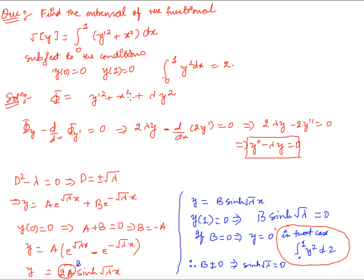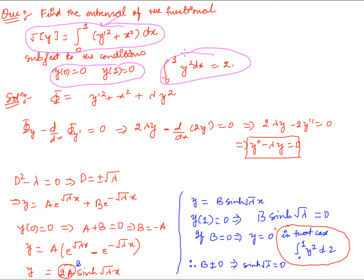Now let us look at more examples. We have to find the extremal of a given functional subject to boundary conditions and a subsidiary condition. We form Φ = f + λ·g and apply the Euler's equation: Φ_y − d/dx(Φ_{y'}) = 0. Applying this here gives 2λy − d/dx(2y') = 0, which simplifies to y'' − λy = 0.